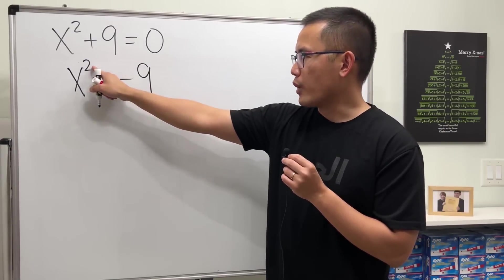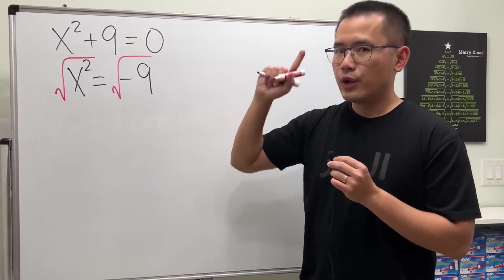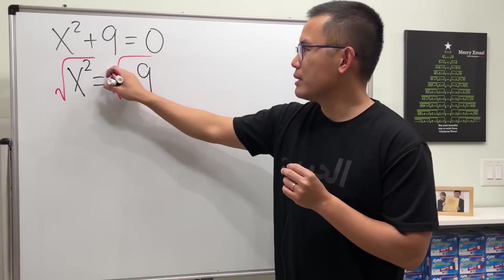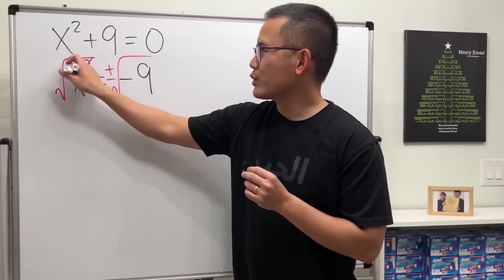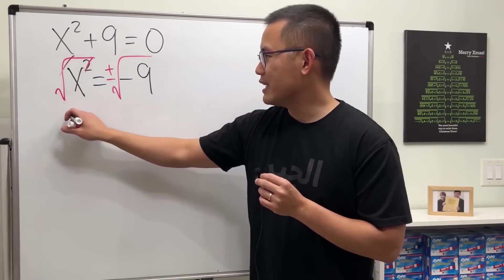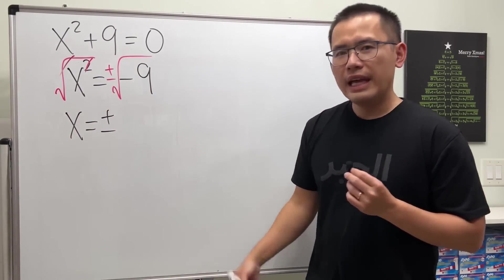Then, to get rid of the square, we can just go ahead and take the square roots of both sides. Remember, we have to put a plus or minus on the right-hand side with the number. This way, the square and the square root cancel, and we just get x is equal to plus or minus.